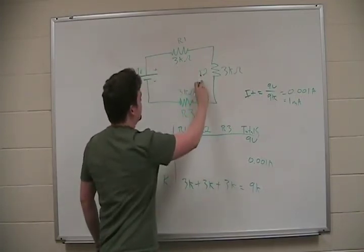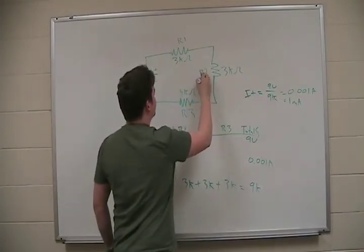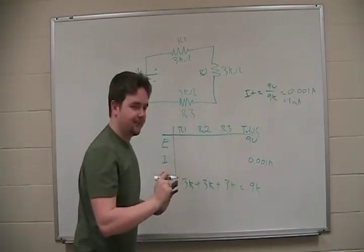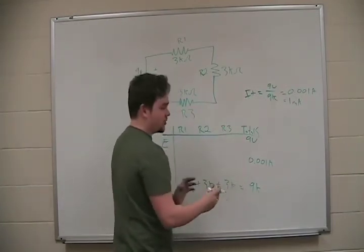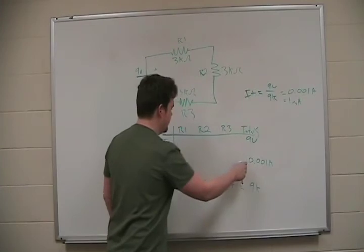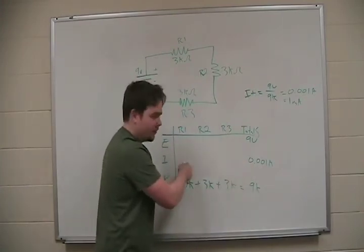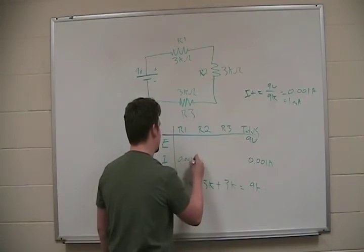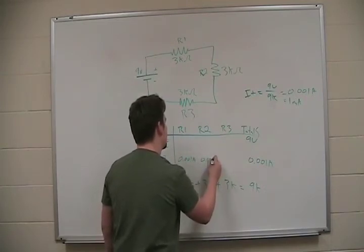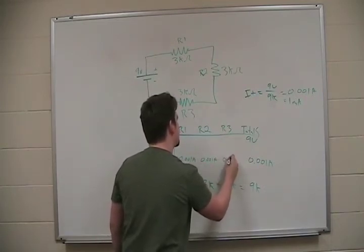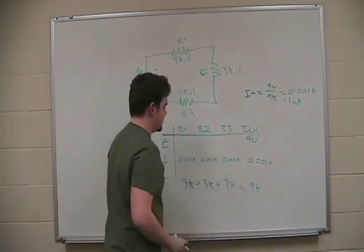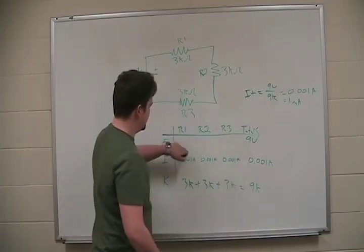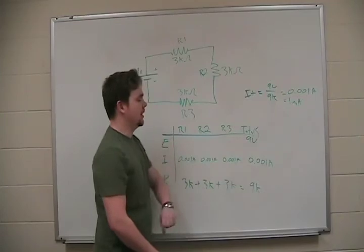Current running through here is the current running through here is the current running through here. It's common. It's not cumulative. So, that's great because once we find a current value, we can add in current values all along here. So, let's do that. 0.001 amps. 0.001 amps. 0.001 amps. So, now, look, we've got two variables for R1, two variables for R2, two variables for R3. So, we can find the voltage values across each of the resistors.